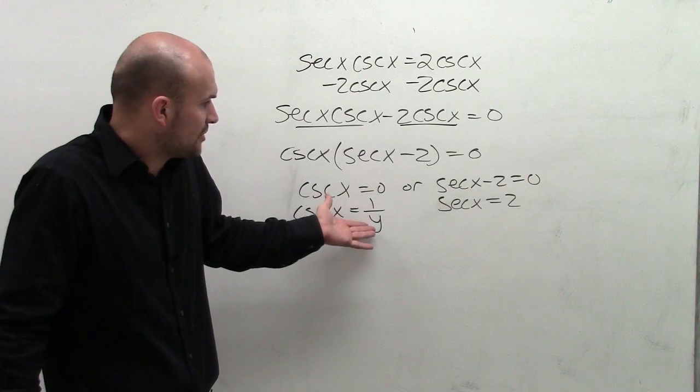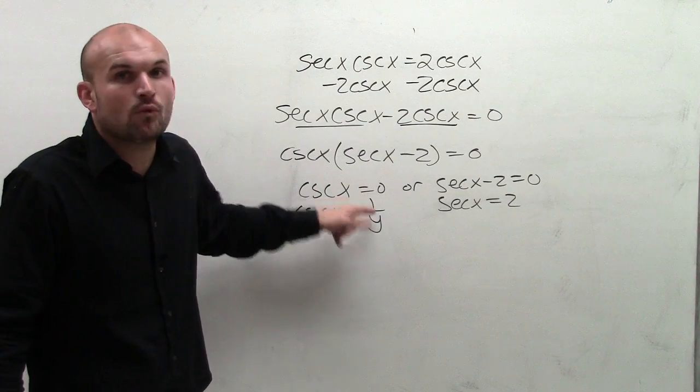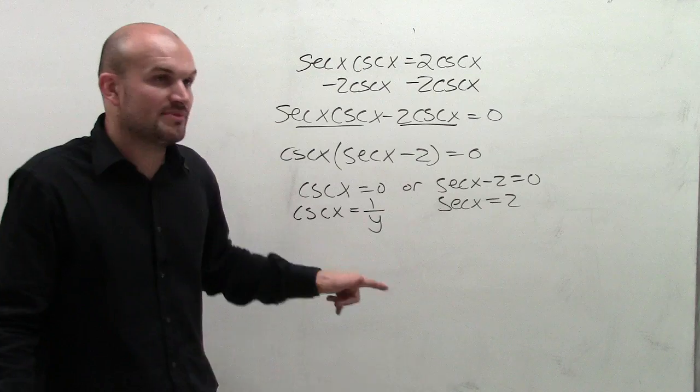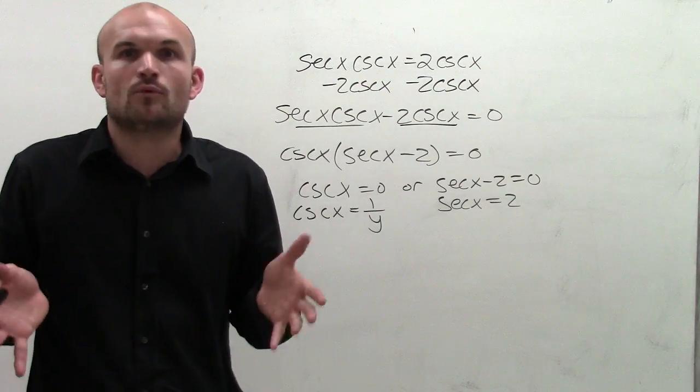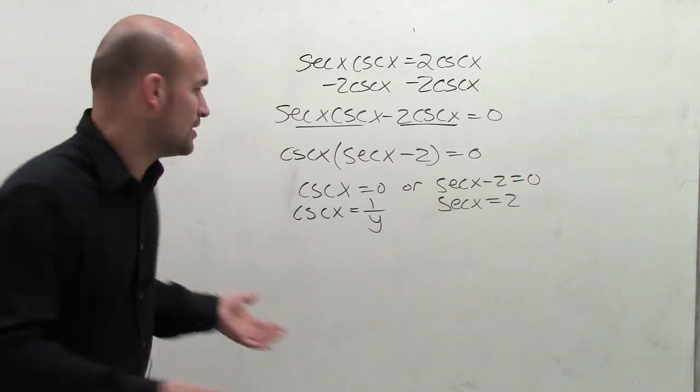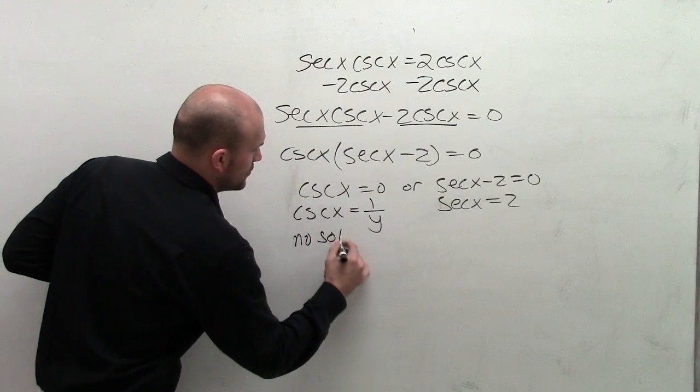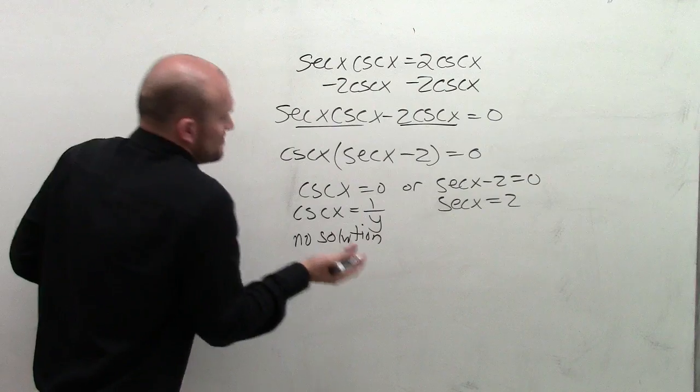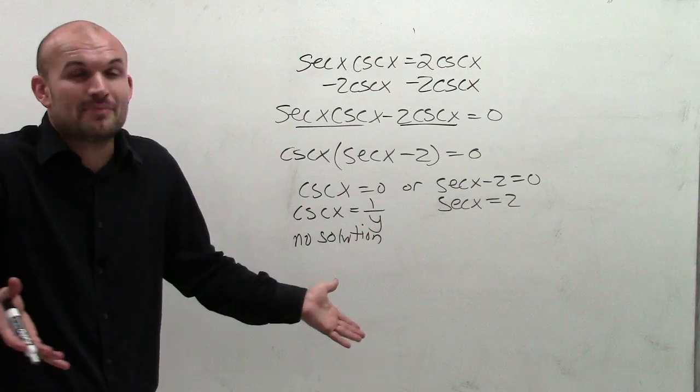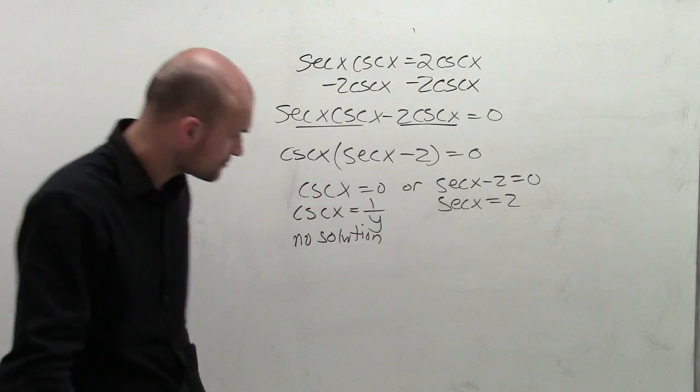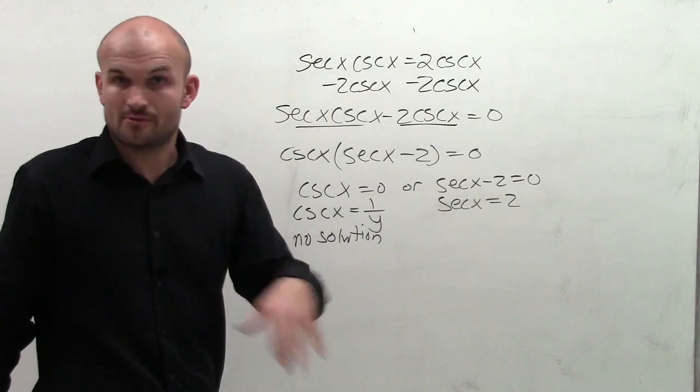So it's impossible for us to be able to define, because you're always going to be 1 divided by a number. We can never take 1 divided by a number and get 0. So therefore, cosecant of x equals 0 is going to be no solution, because it's impossible for us to take 1 divided by a number and obtain 0, because 1 divided by 0 is undefined.